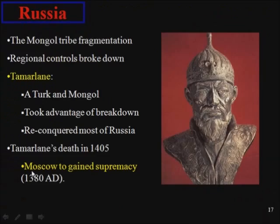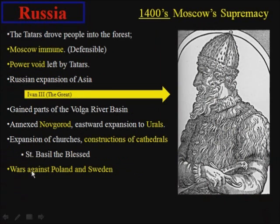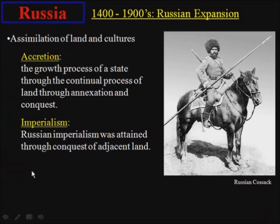I'm going to skip through some of these slides. They're basically talking about the Mongol history throughout Russia. With this particular slide, we're talking about the power void that gets created when the Mongols leave, and it helps give rise to the Tsars. A couple of definitions I want to address — one term is accretion.